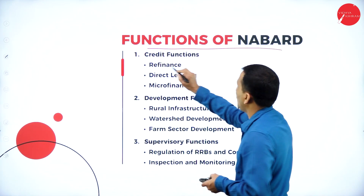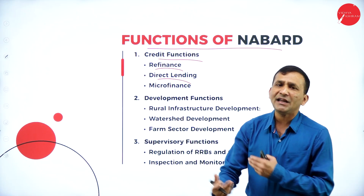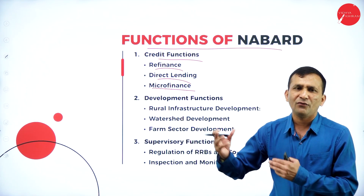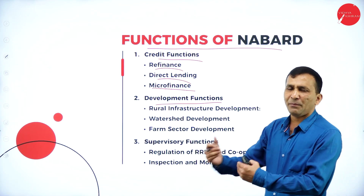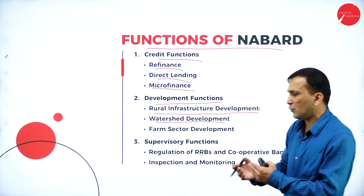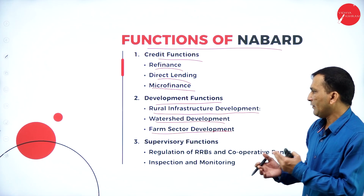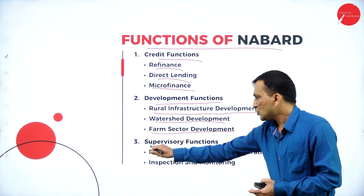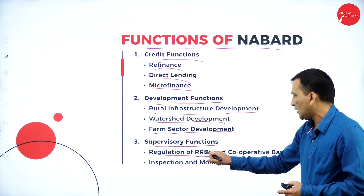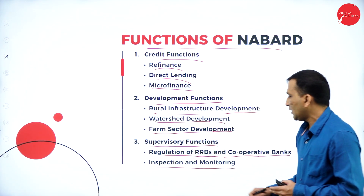The functions of NABARD: under the credit function, refinancing facility is the major component, along with direct lending to farmers and rural development, and microfinance related to self-help groups. Development functions include rural infrastructure development, watershed development — since water source is very important for farmers — and farm sector development. The supervisory function has NABARD acting as a supervisor: regulating Regional Rural Banks and cooperative banks, with inspection and monitoring to find out performance after financing.